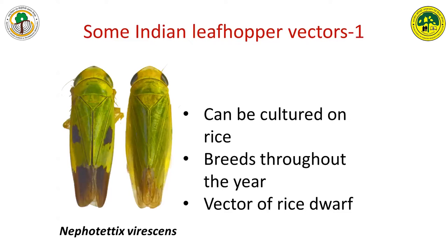Some of the vectors — this is the rice green leafhopper, Nephotettix virescens. It has also been incriminated, from this very institute, as a vector of sandal spike. But a lot of questions are raised by various scientists, including me, that it may not be a vector. So this is a putative vector. What is important to know is that it is a confirmed vector of rice yellow dwarf — mainly because of work done here in our lab by Dr. Muniyappa and others.